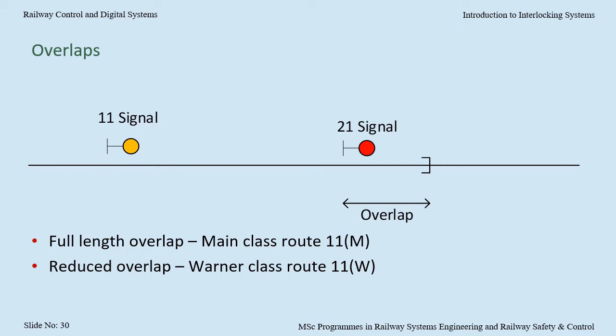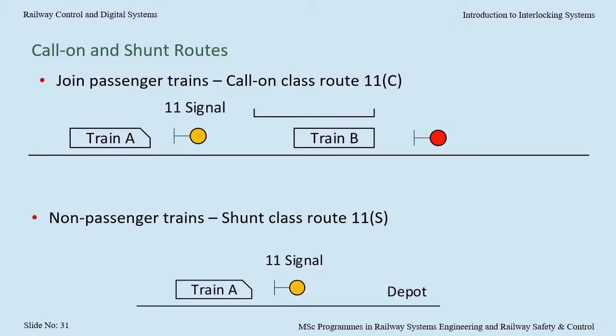Each railway will decide its desirable overlap length, but when designing the scheme plan there are many competing requirements such as headway and physical site constraints. Sometimes the desired overlap length is not achievable, so we allow a reduced overlap but add other safety controls. Some railways have different classes of route: where the full overlap is available, this might be called a main class route; where a reduced overlap is provided, a warning class route. Where the driver must proceed prepared to stop short of any obstruction, some railways distinguish between a call-on class route — where passengers may be involved, such as joining two passenger trains — and a shunt class route for non-passenger moves such as entering a depot or siding.